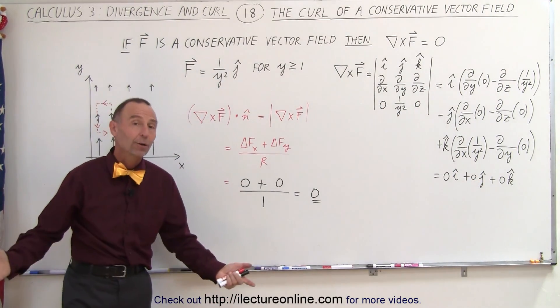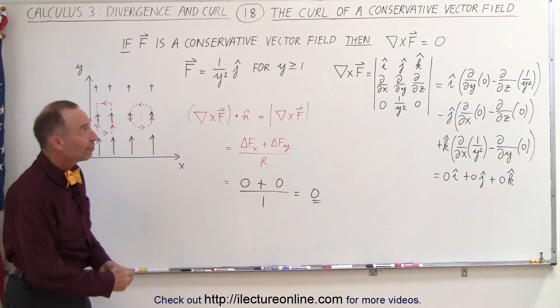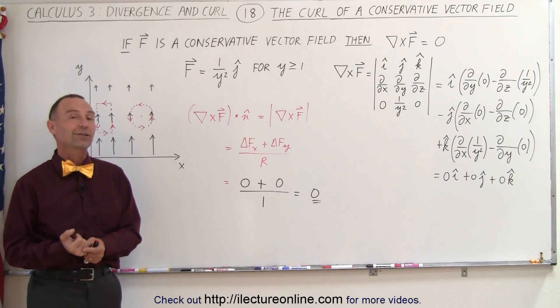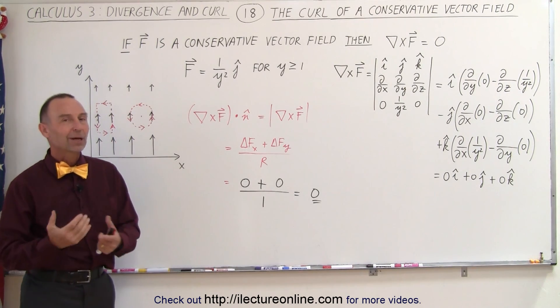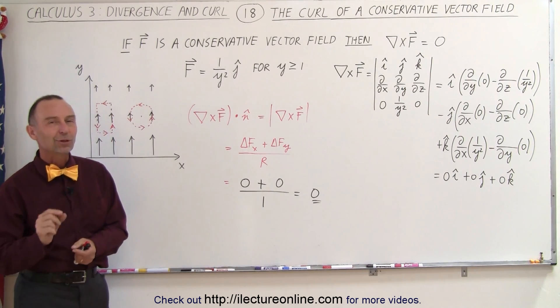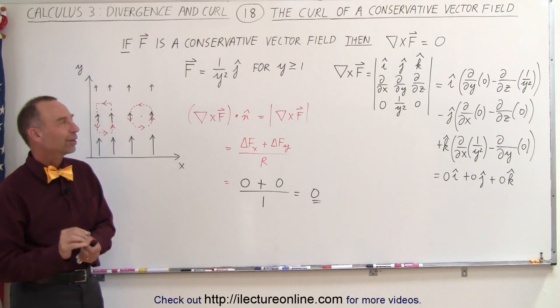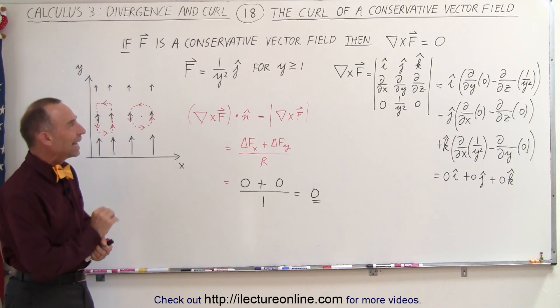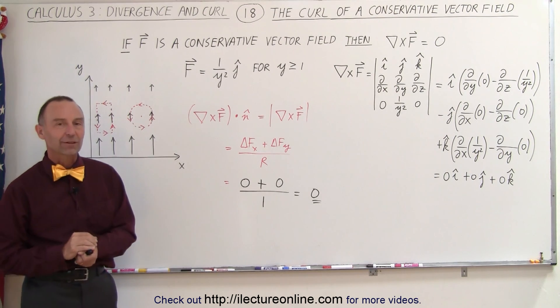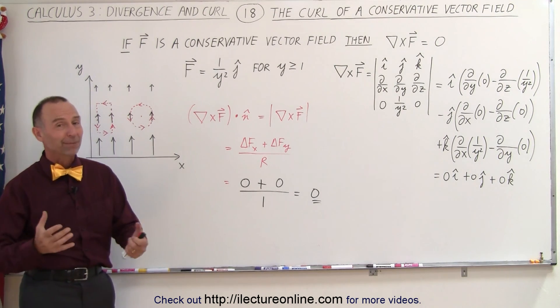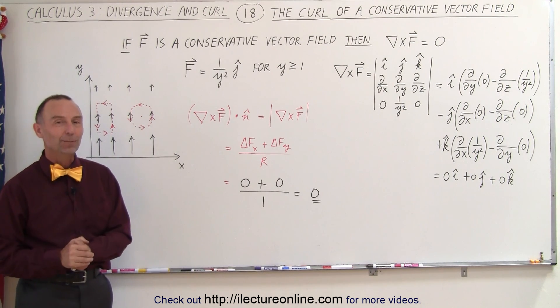So there you go. If you take the curl of the vector field and it equals zero, then you know the vector field is a conservative vector field. And that's how we know.